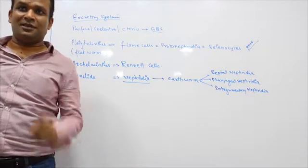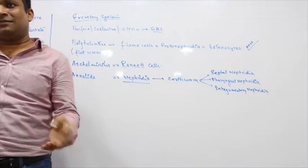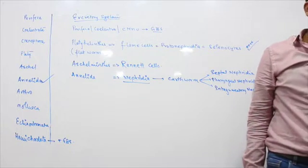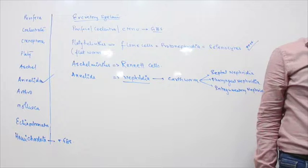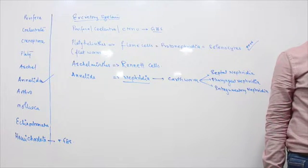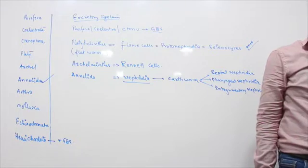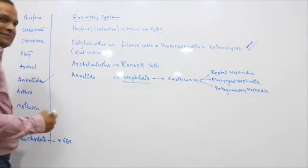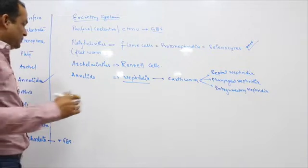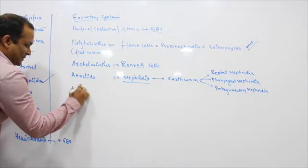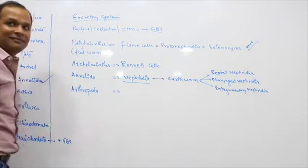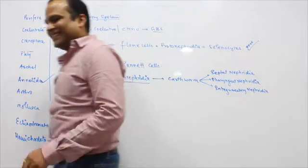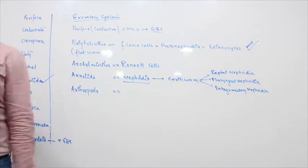The main function of nephridia — and even the kidney — is osmoregulation. The second function is excretion. The third function is secretion of the hormone erythropoietin. Even if asked about the kidney's main function, the answer is osmoregulation.